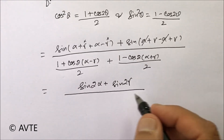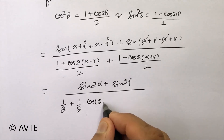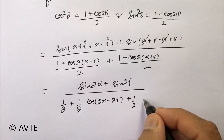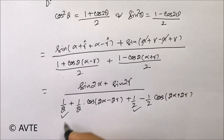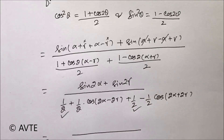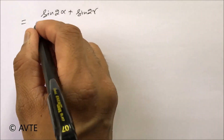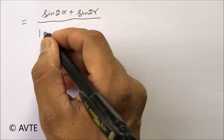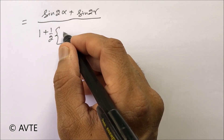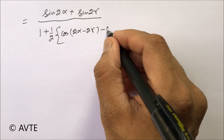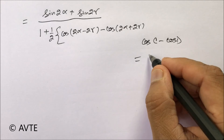In the denominator, we split and write (1/2) + (1/2)·cos(2α − 2γ) + (1/2) − (1/2)·cos(2α + 2γ). The two 1/2 terms combine to give 1. Taking 1/2 common from the remaining terms and applying sum-to-product — cos C − cos D — gives the denominator simplification.